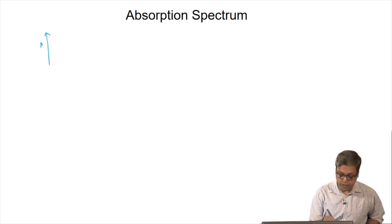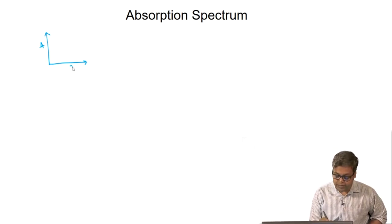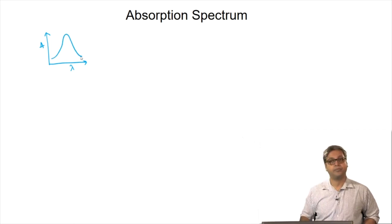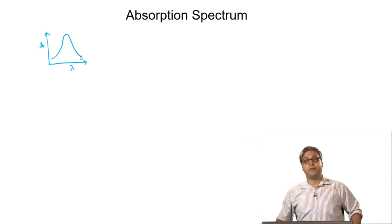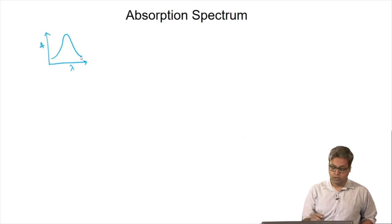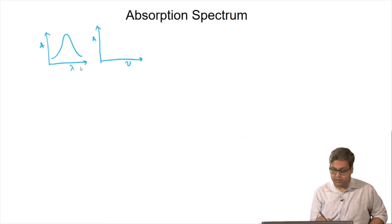In the last lecture, we discussed how we can obtain an absorption spectrum. We mentioned that if we plot absorbance obtained from a spectroscopic experiment against wavelength lambda, we can obtain an absorption spectrum. Although conventionally absorbance is plotted against wavelength, we can also plot absorbance against frequency, as these are interchangeable.